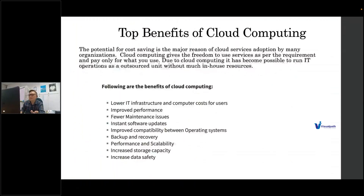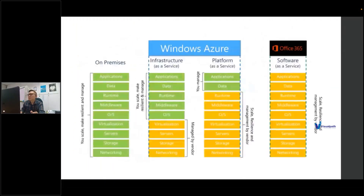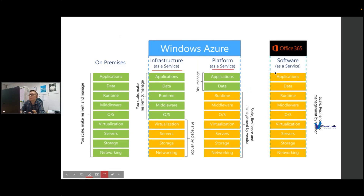Yesterday we had a brief discussion about the types of cloud services. In cloud there are three major types: IaaS — Infrastructure as a Service, PaaS — Platform as a Service, SaaS — Software as a Service. And again, anything as a service: code as a service, and so on.